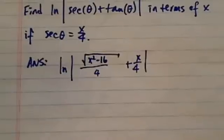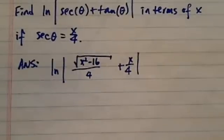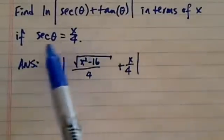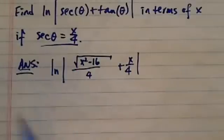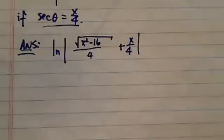Find the natural log of secant theta plus tangent theta in terms of x if the secant theta is x over 4. The answer is here. There are two ways to get this answer.